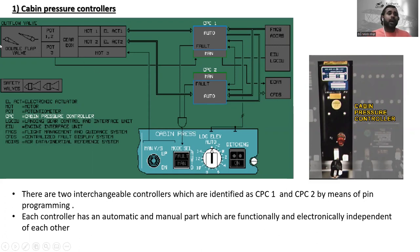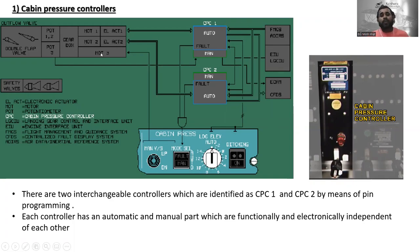This is the outflow valve and its position indicator. These are potentiometers one, two, and three, the gearbox, motor one, motor two, and motor three.